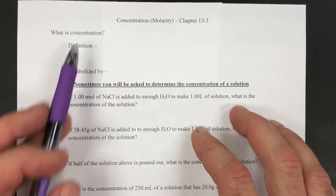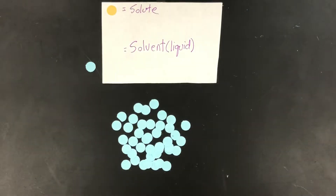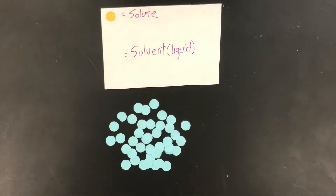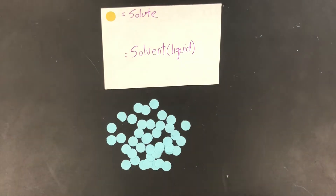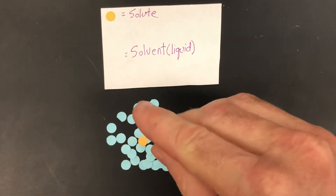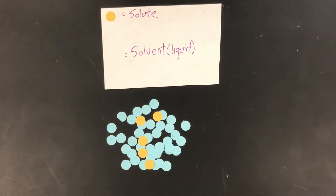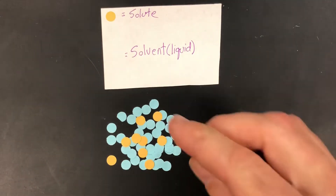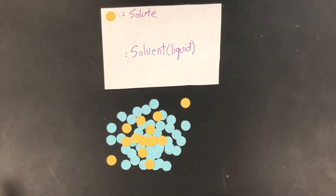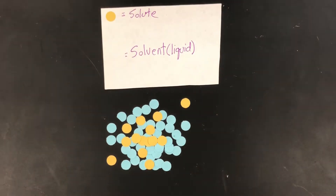We're going to start with a definition of concentration using this model. We've got a solvent, which is a liquid — pretend this is like a beaker or a cup full of water — and we also have a solute. Right now there's no solute in this water, but if I add some solute, say like salt or sugar, now we could say that's concentrated. If I add more solute, it becomes more concentrated. Eventually the solute would just fall to the bottom and not dissolve. We're being qualitative about that — we want to be quantitative, where we can actually measure the numbers.